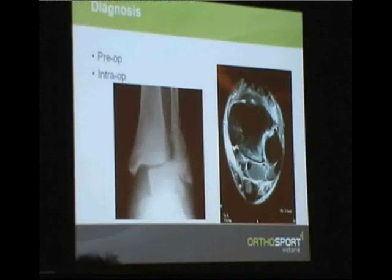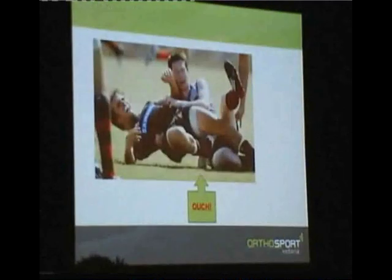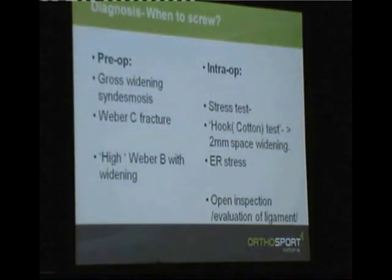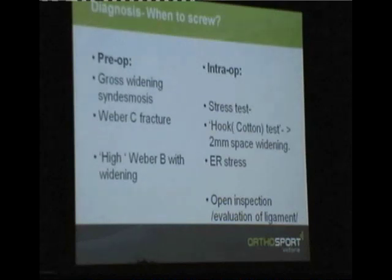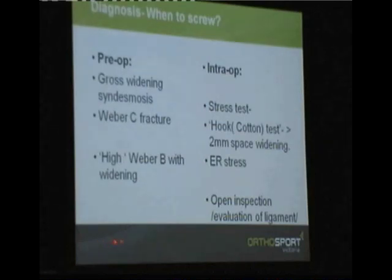Diagnosing these injuries: some are obvious, some are not so obvious and may be picked up on MRI scan or other imaging. When should we be screwing? Preoperatively there might be gross widening of the syndesmosis, a Weber C fracture, or high Weber B displacement where you know the syndesmosis is gone. Otherwise we're looking at intraoperative testing — the hook test and/or external rotation test, looking at more than two millimetres of widening. There's also a case for peeling up further and openly looking at the anterior syndesmotic ligament to better assess instability rather than relying on radiology alone.